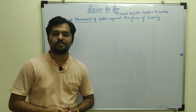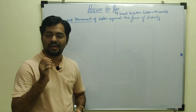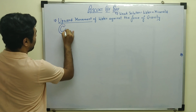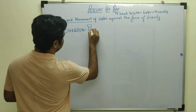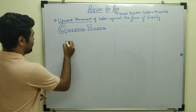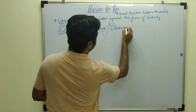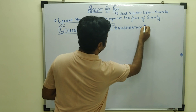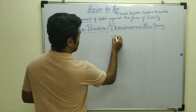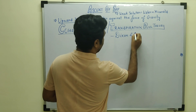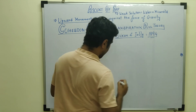Many scientists have given different theories to explain the ascent of sap, but the most acceptable theory is known as the cohesion tension theory — also known as the transpiration pull theory. This theory was given by two scientists, Dixon and Jolly, in the year 1894.